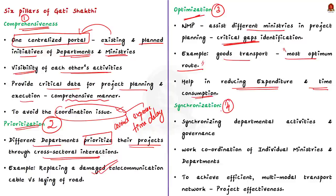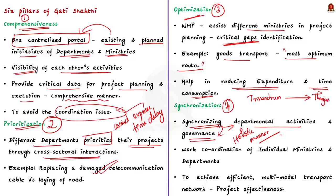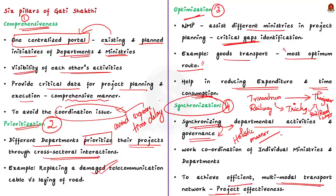The fourth pillar is synchronization. PM Gati Shakti will help in synchronizing the activities of each department as well as different layers of governance in a holistic manner. For example, consider a railway project planned between Thiruvananthapuram and Trichy. If you want to go to Thanjavur, you will need additional transport from Trichy — either roadway or railway. PM Gati Shakti helps individual ministries and departments work in a coordinated manner to achieve an efficient, seamless multimodal transport network. Through synchronization, the program brings effectiveness to all projects.